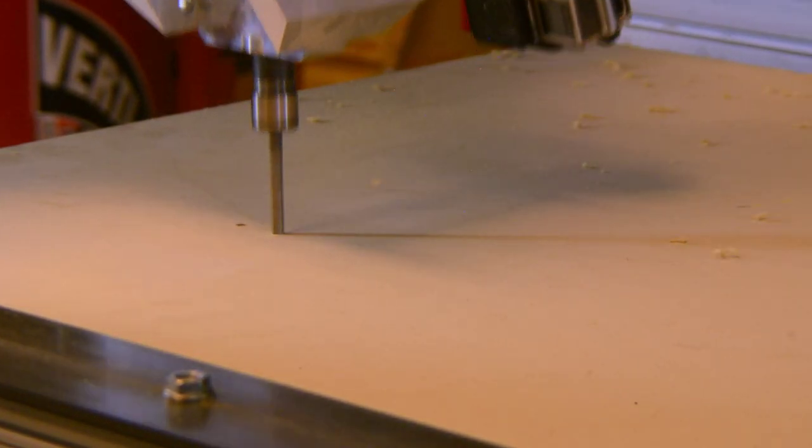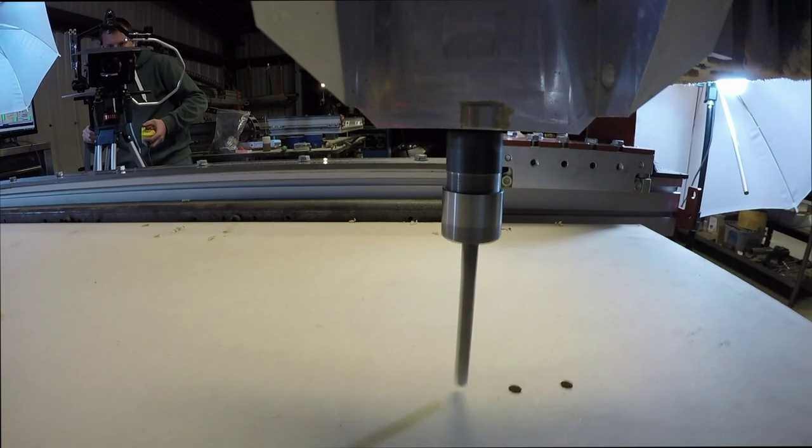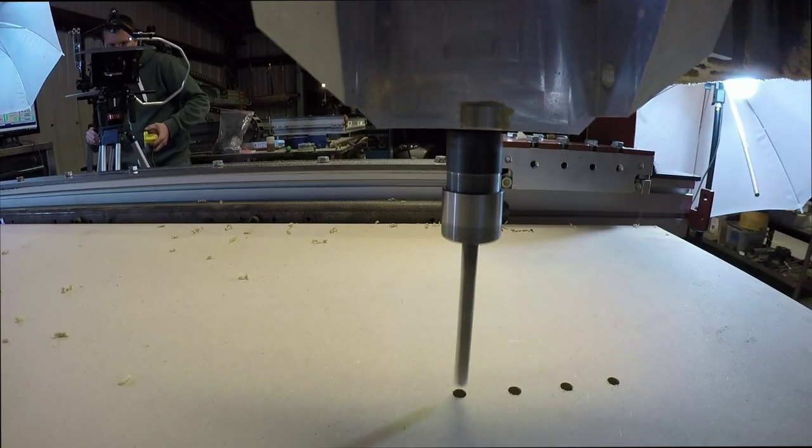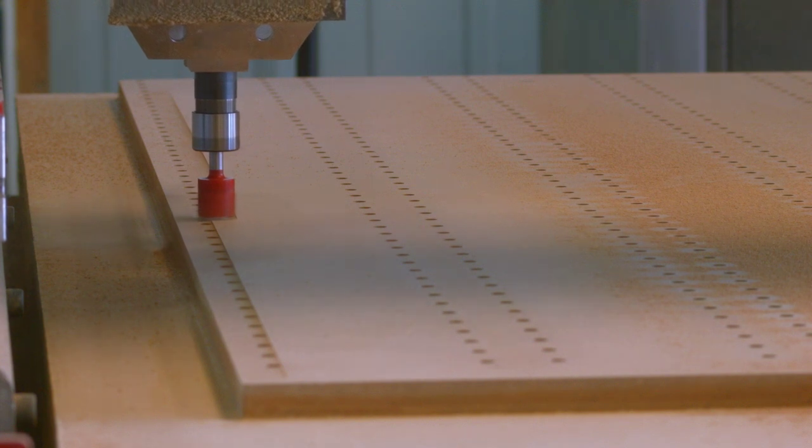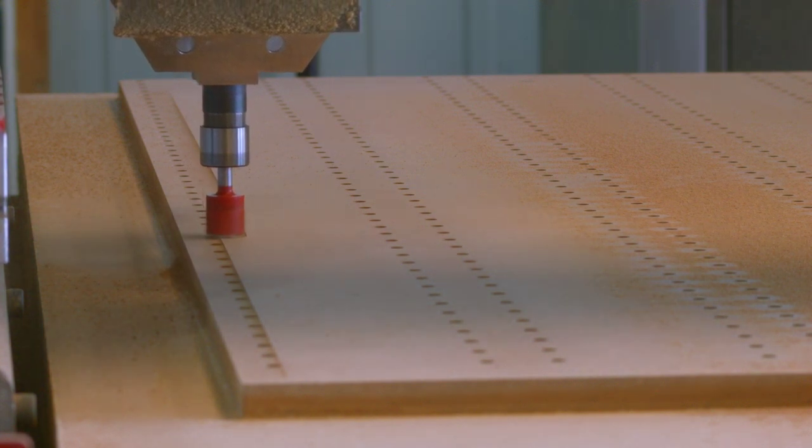The glue is set and the table can now go on the CNC router for vacuum holes. The table gets a quick surfacing and it's ready for use.